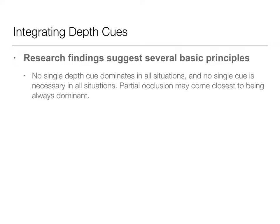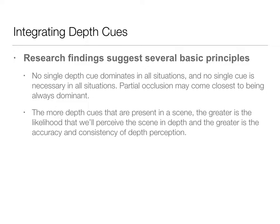The research findings suggest there are several principles that integration of these depth cues operate under. The first is that none of these depth cues dominates all situations, and no single cue is necessary in all situations. Partial occlusion is the closest we have to always being dominant, but even partial occlusion is not dominant in all situations. The more depth cues that are present, the greater the likelihood we'll perceive the scene in depth, and the greater the accuracy and consistency of the depth perception. So the more input we have, the better information the visual system has to make decisions about depth and distance.